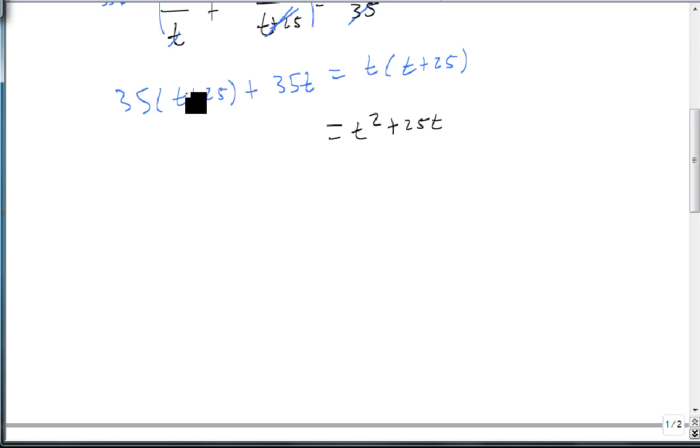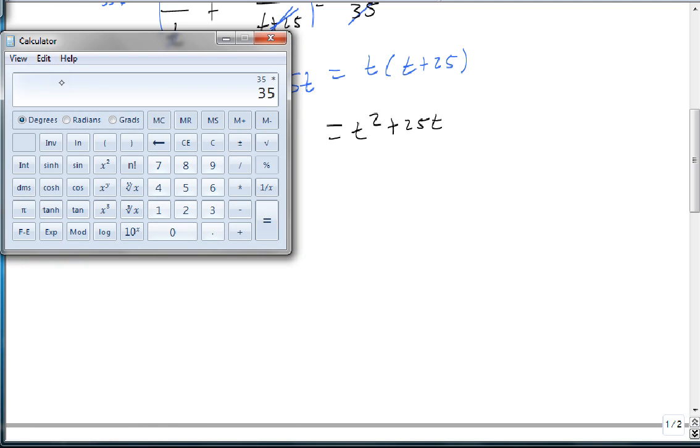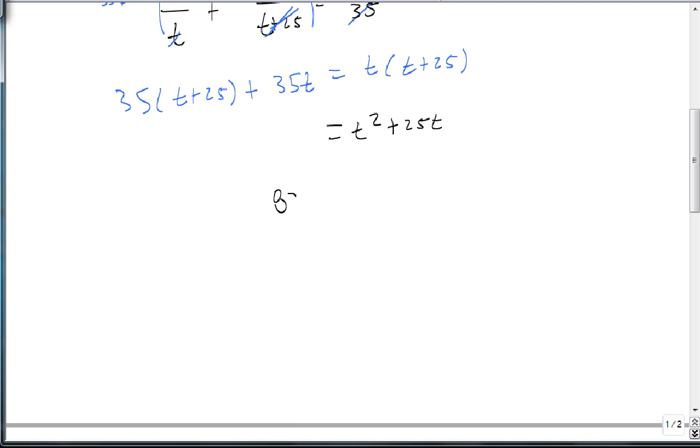On the left though, we've got just a little bit to figure out. We need to know what 35 times 25 is: 875. Let's line that up. And then we're going to get 35t and 35t. So this 35 and this 35 add up to 70t.